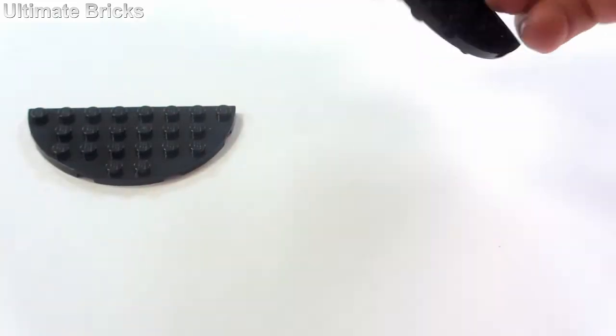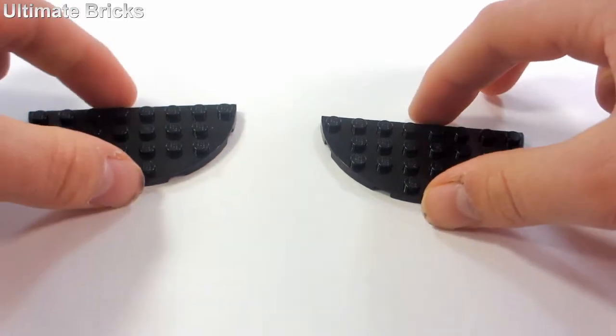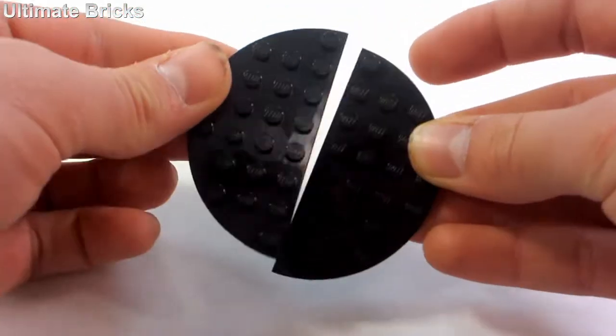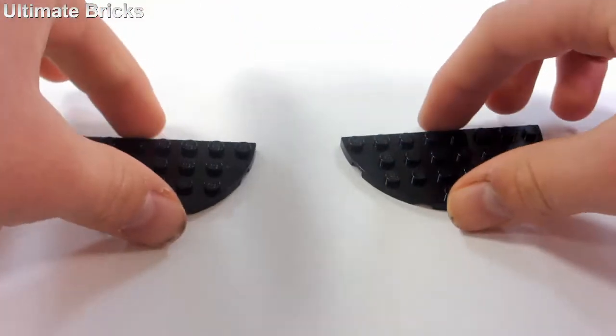First things first are the lenses. I'm using these lenses right here which are these two half-circle pieces. If I put them together they make a circle, and apart they're a half circle.